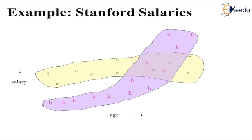For example, this is the Stanford salaries example, where the salaries of different types of employees and their hires are placed, and you can observe that two clusters are formed. Such shapes are quite difficult when things overlap, which cannot be represented using K-means clustering or any other clustering algorithm, whereas QR plays a very important and vital role.